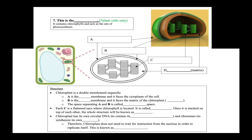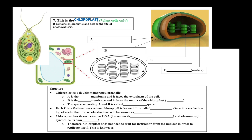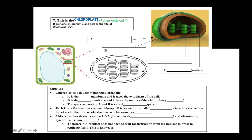This is the chloroplast. It is very important for students to know that chloroplasts can only be found in plant cells and the cells of other producers, such as green algae. Chloroplasts contain chlorophylls and act as the site of food production through the process of photosynthesis.